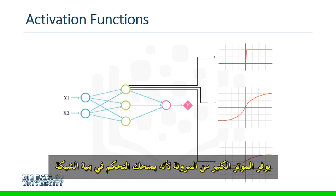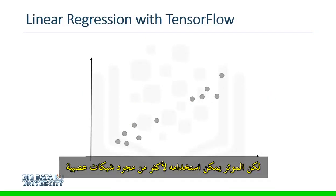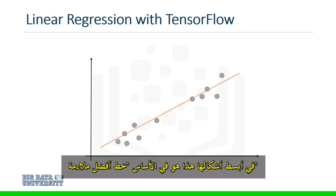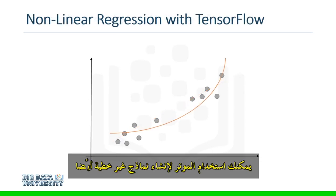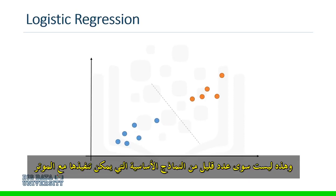TensorFlow provides a lot of flexibility because it gives you control over the network's structure and the functions used for processing. But TensorFlow can be used for more than just neural networks. It can also be used to take a set of points and apply a linear regression. In its most basic form, this is essentially a line of best fit. And if a line isn't suitable for your data, you can use TensorFlow to build nonlinear models as well. If you need to build a model to perform classification, with TensorFlow, you can easily implement logistic regression. And these are just a few of the basic models that can be implemented with TensorFlow.